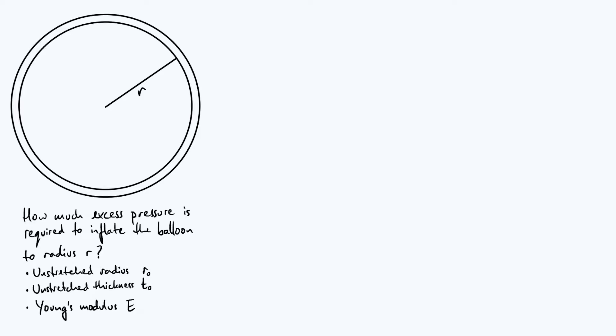Then we've also got the Young's modulus of the rubber material that the balloon is made of. If you've never come across that before, I'll define it more quantitatively later on, but it's basically a number that quantifies how an elastic material stretches in response to an applied force.